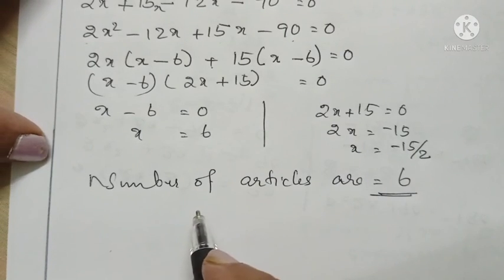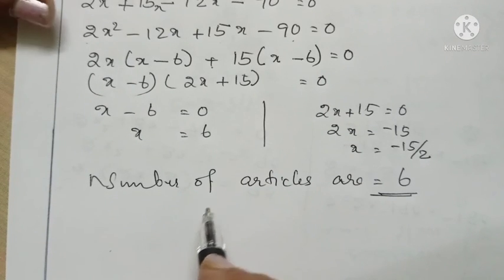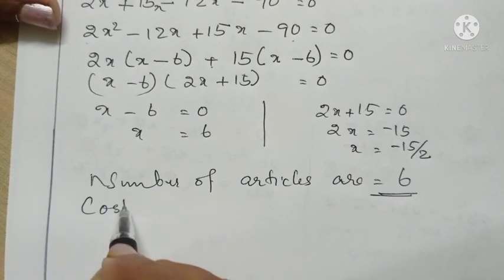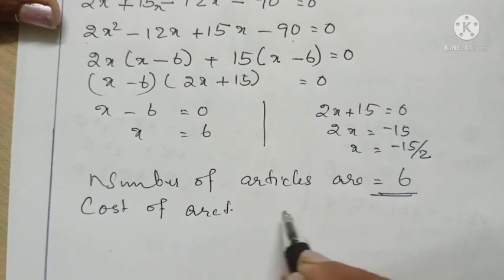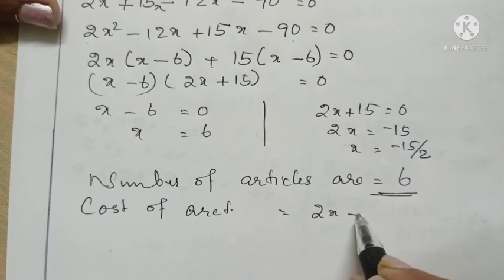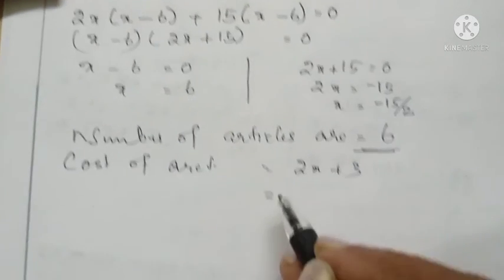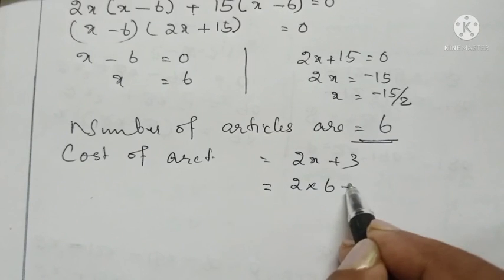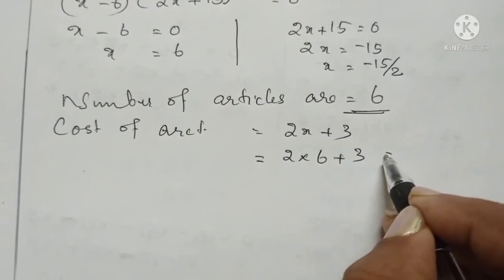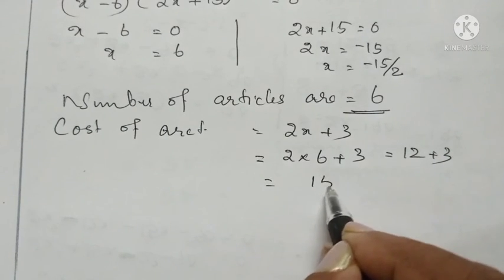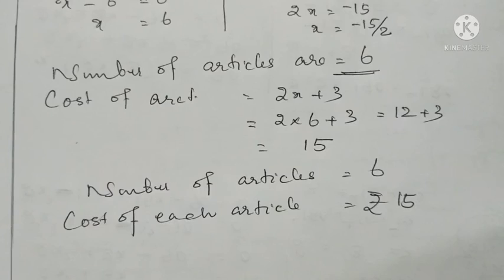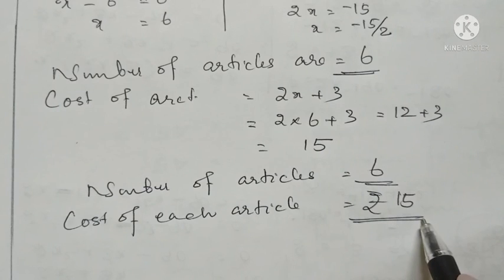Then we have to find the cost of each article. Cost of each article is given as 2x plus 3. Substituting x equals 6: 2 into 6 plus 3 equals 12 plus 3 equals 15. Therefore, the number of articles is equal to 6 and the cost of each article is equal to rupees 15.